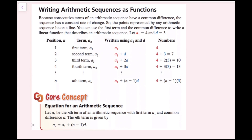Writing arithmetic sequences as functions. Because consecutive terms of an arithmetic sequence have a common difference, the sequence has a constant rate of change, so the points lie on a line. You can use the first term and the common difference to write a linear function. With a sub 1 equal to 4 and d equal to 3: the first term is a sub 1; the second term is a sub 1 plus d; the third term is a sub 1 plus 2d. On the nth term, we do n minus 1 times the common difference, plus our initial value.